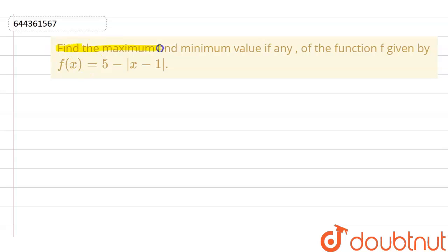find the maximum and minimum value of the function f, which is given as f(x) = 5 - |x - 1|. So firstly, writing this function: f(x) = 5 - |x - 1|.